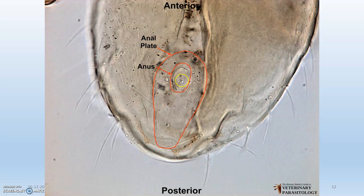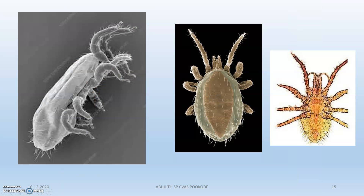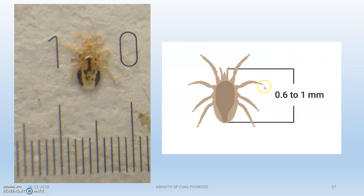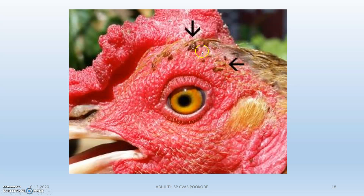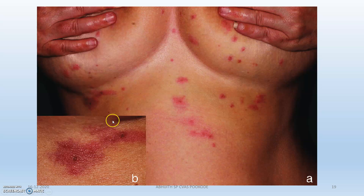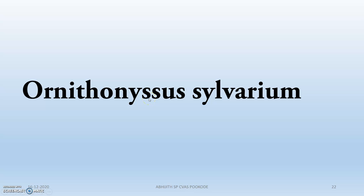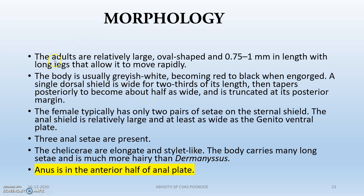Note the anal plate and the anus. This is the rat mite — bacoti — the fowl mite and northern fowl mite. You can see small mites in the human condition. Moving to Ornithonyssus sylviarum morphology: the adults are relatively large and oval-shaped. The anus is in the anterior half of the anal plate, whereas in Dermanyssus it is in the posterior half. These species are much more hairy than Dermanyssus. The three NLCDs are present.